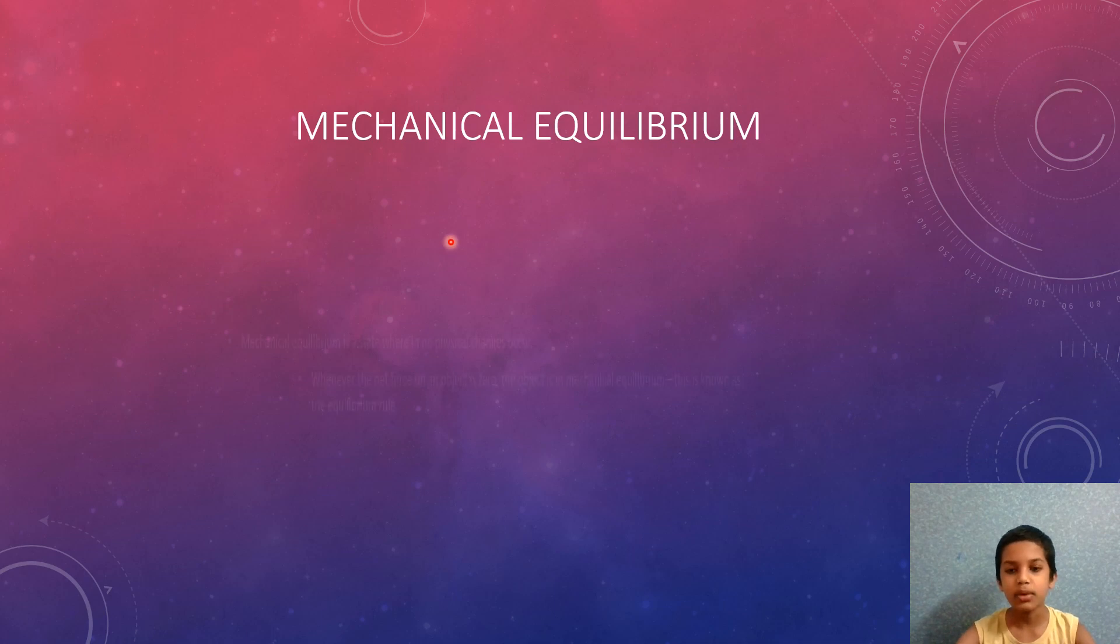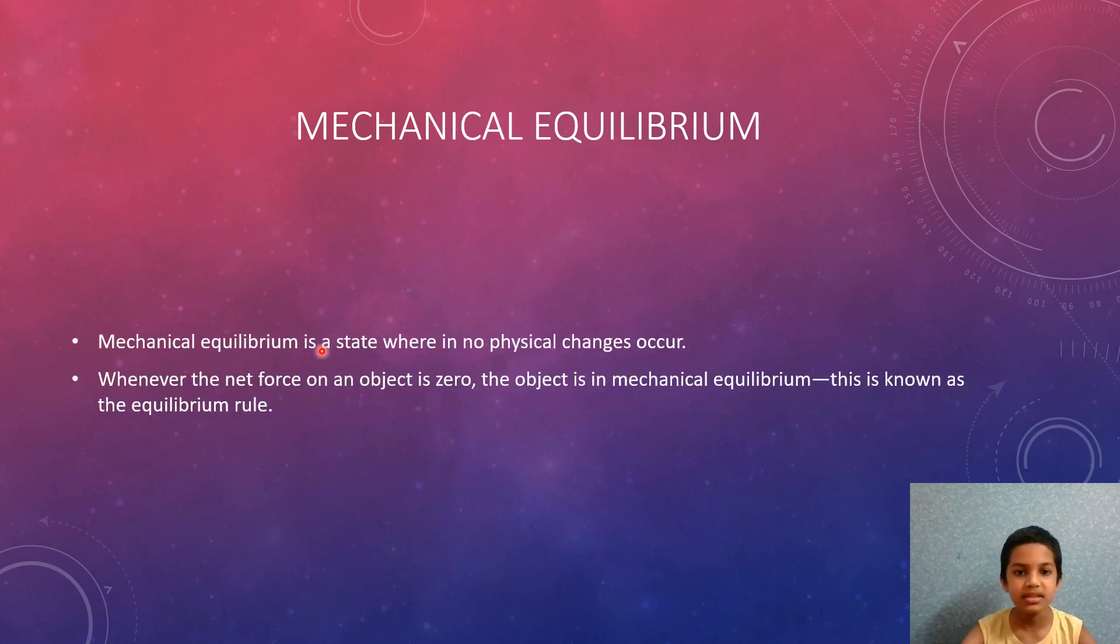Mechanical equilibrium is a state wherein no physical changes occur. Whenever the net force of an object is zero, the object is in mechanical equilibrium. This is known as the equilibrium rule.